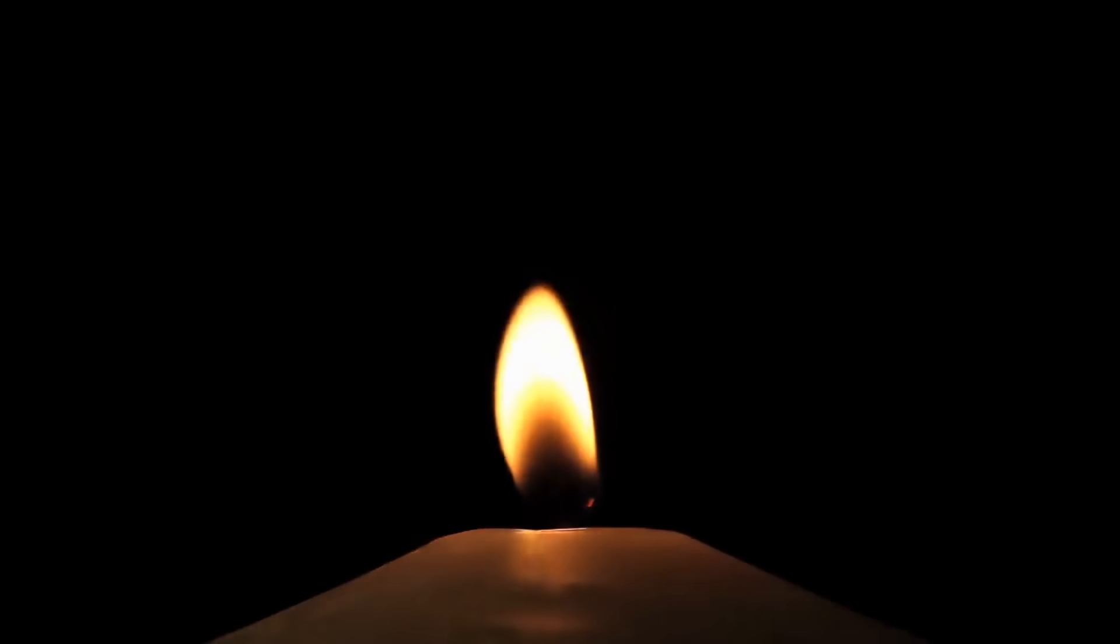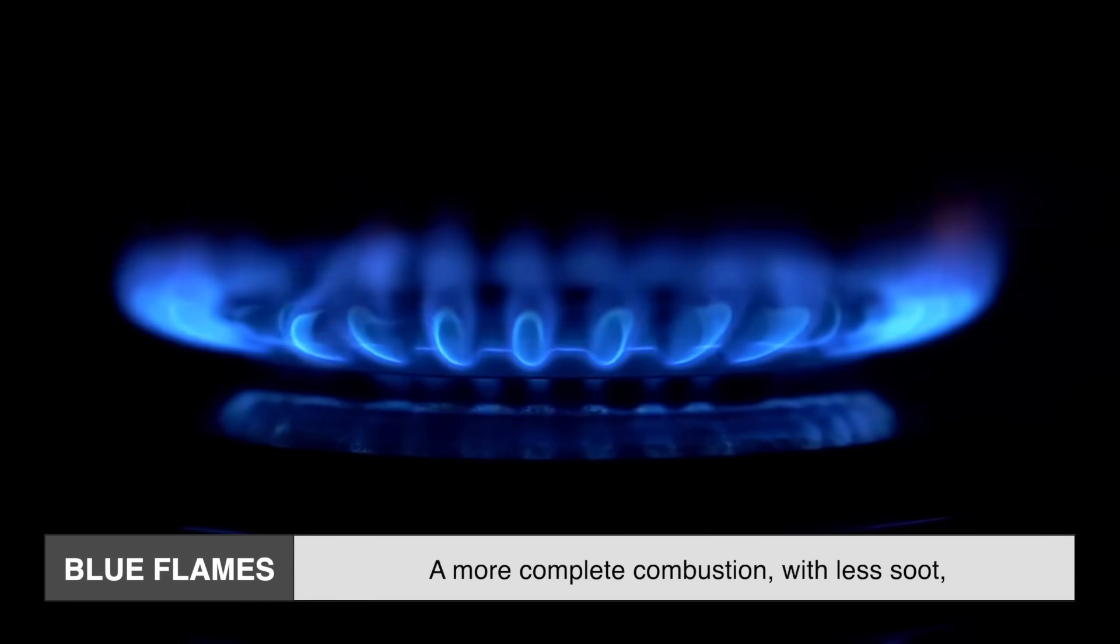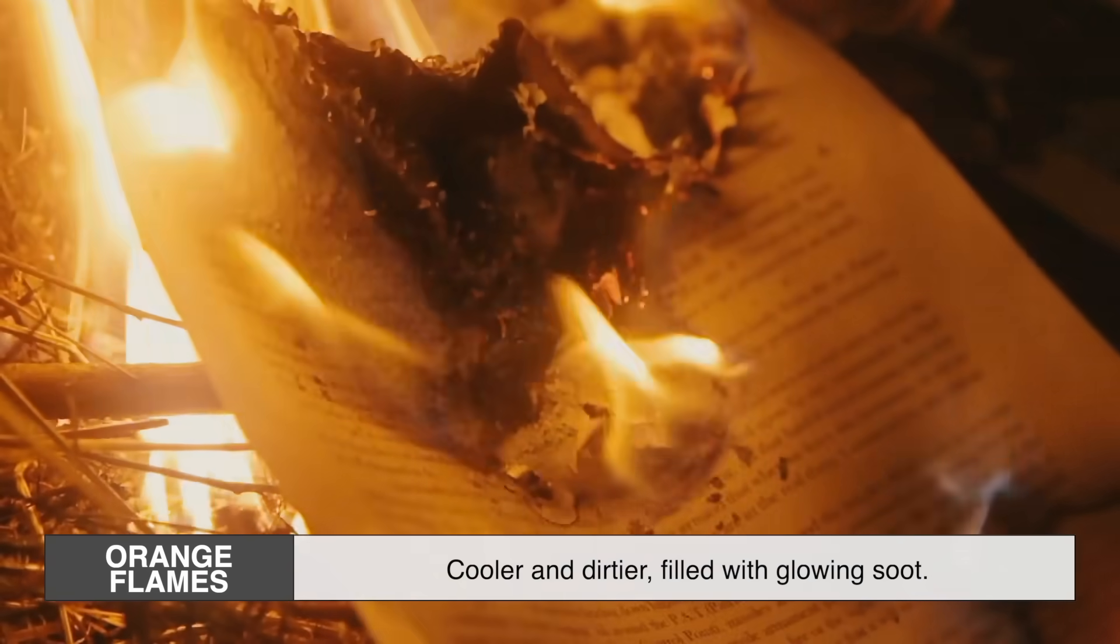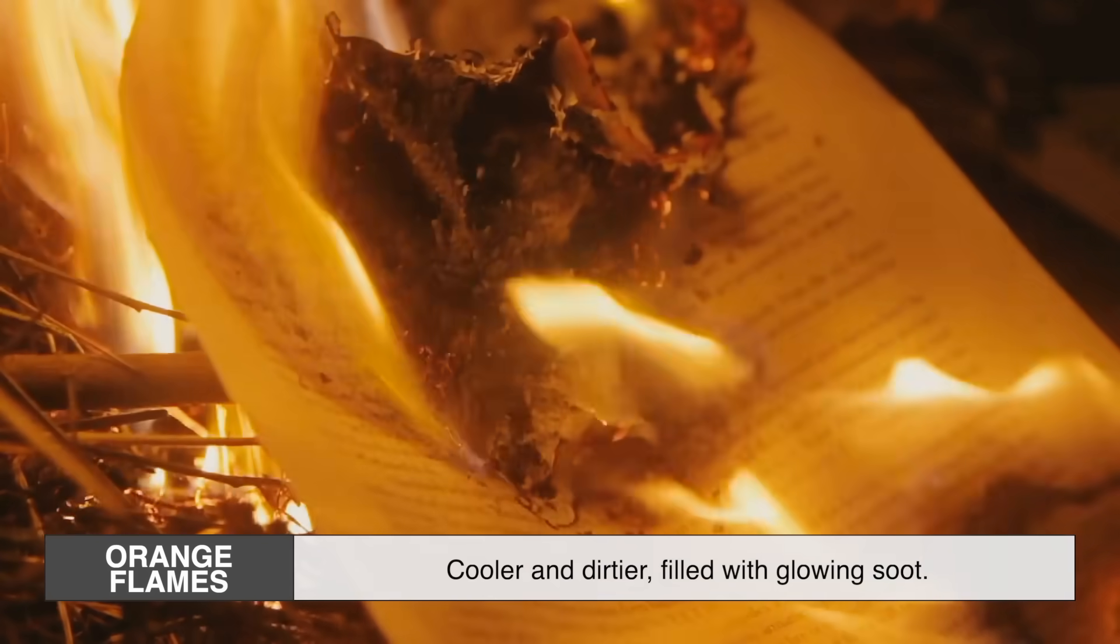So the color of a flame can tell you a lot about what's burning and how hot it is. Blue flames usually mean a more complete combustion with less soot and higher temperatures. Orange flames, cooler and dirtier, filled with glowing soot.